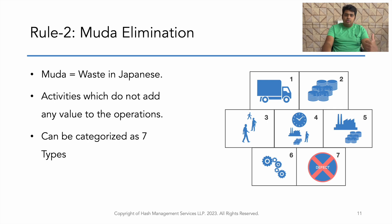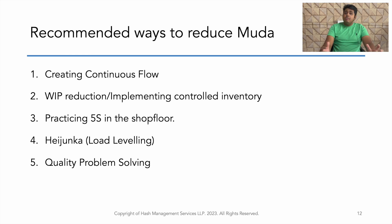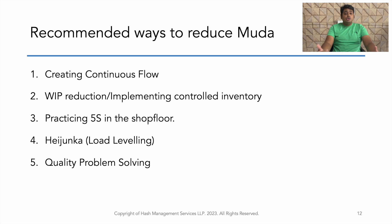You can check the video on the 7 Wastes of Manufacturing via the links in the description. Some recommended ways to reduce Muda: we can create continuous flow; we can reduce WIP or implement controlled inventory; we can practice 5S in the shop floor; we can implement Heijunka, which is nothing but load leveling; and we can pursue quality problem solving.